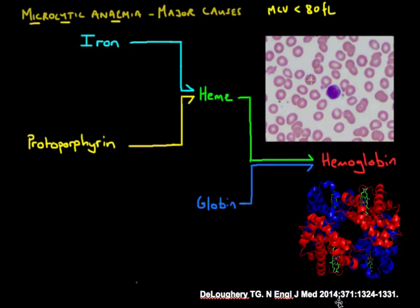Another way to define microcytosis is to look at red blood cells on a peripheral blood smear. We take the diameter of one red blood cell and compare it to the diameter of the nucleus of a small lymphocyte. Normally they should be more or less the same, and if the red cell diameter is smaller, that indicates microcytosis.